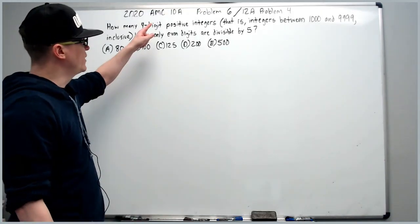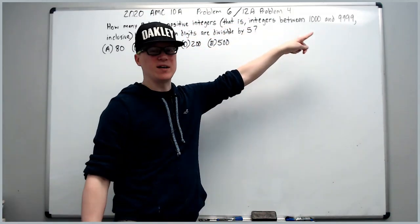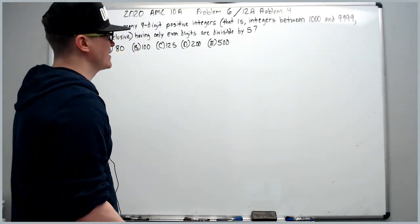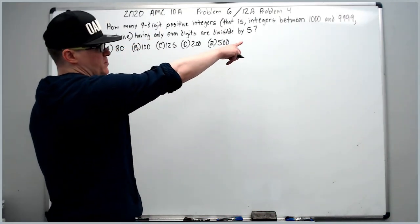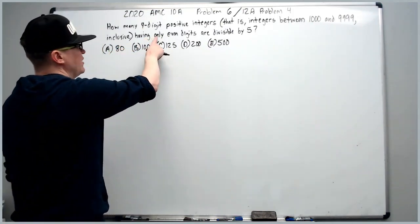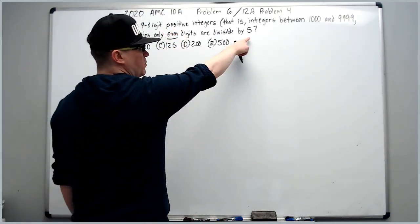Okay, in the 2020 10A problem six, which was also the 12A problem four, how many four digit positive integers, that is integers between 1000 and 9999 inclusive, which should be obvious, having only even digits are divisible by five.